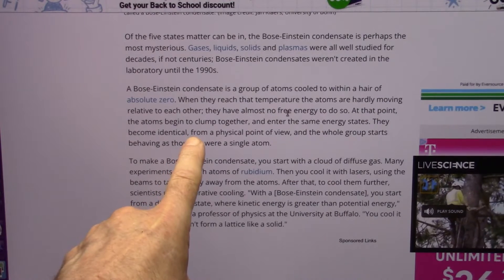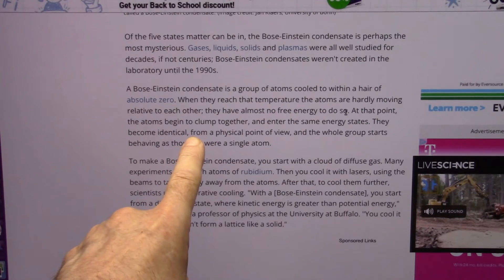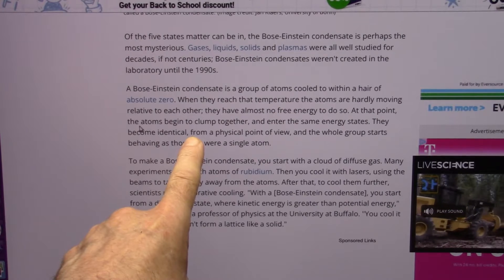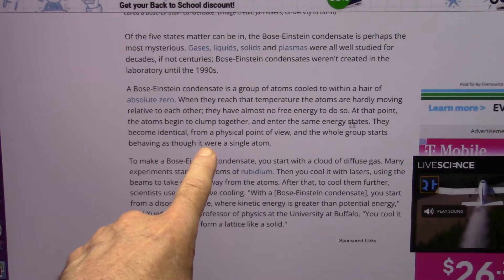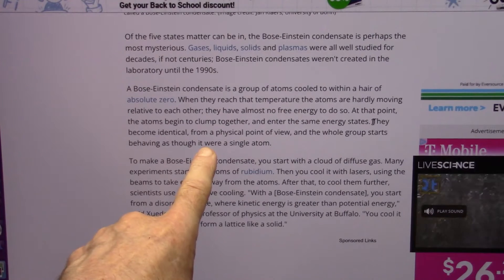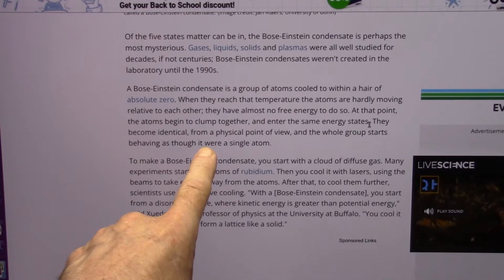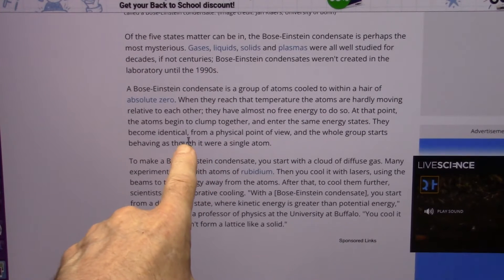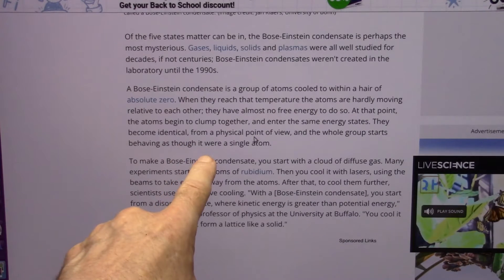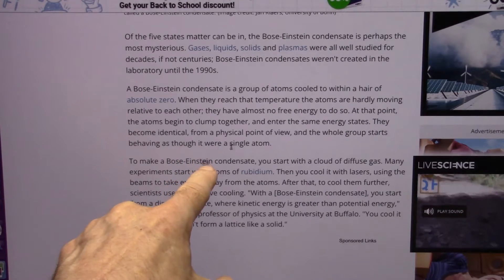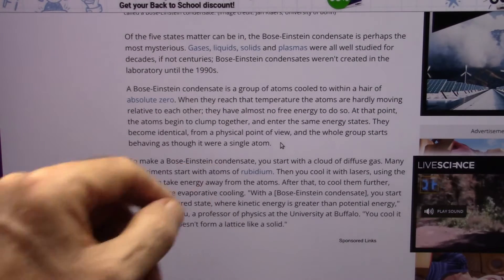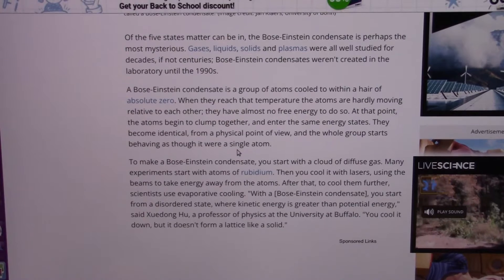They have almost no free energy to push and shove each other around. At that point, the atoms begin to clump together and enter the same energy state, which is they're just solid black balls, and they just clump together as dark matter. They become identical from a physical point of view, and the whole group starts to behave as though it were a single atom. Let me show you that actually happening.